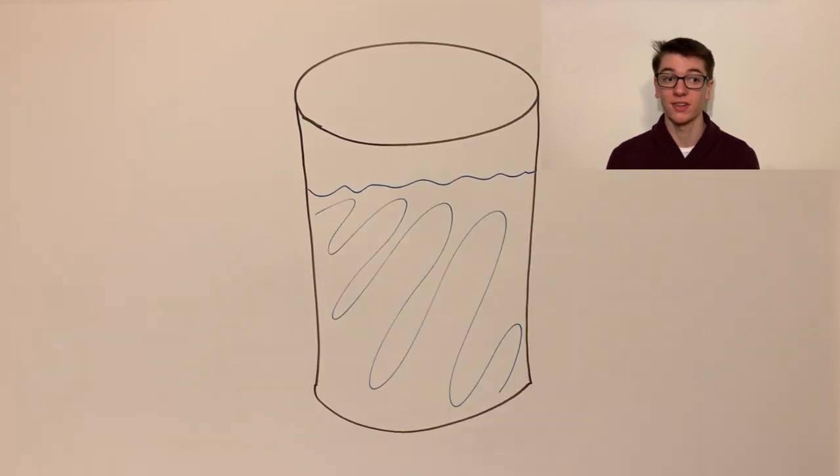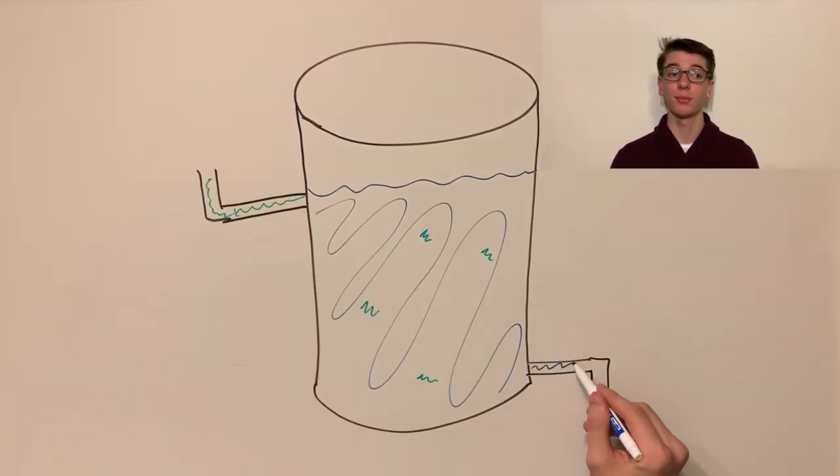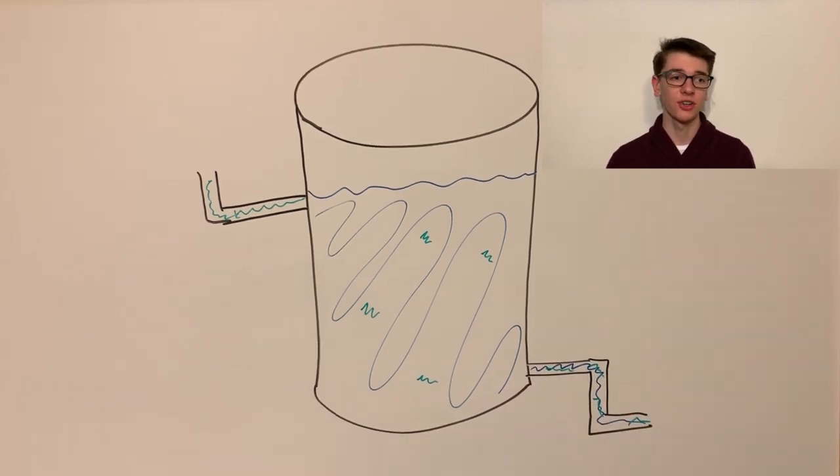This problem is starting to sound similar to one that most encounter in an intro to calculus course where there's a tank filled with a mixture. Some concentrate is being added and the homogeneous mixture is simultaneously drained out. The question asks what the concentration is at any given time. The key that allows this problem to be solved with methods of single variable calculus is that the liquid leaving is of the same concentration as the mixture as a whole.